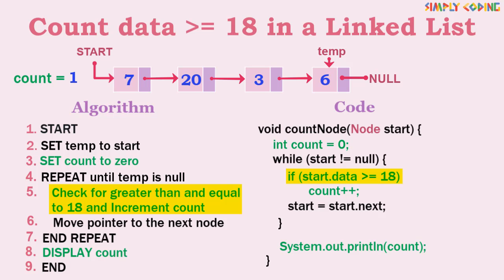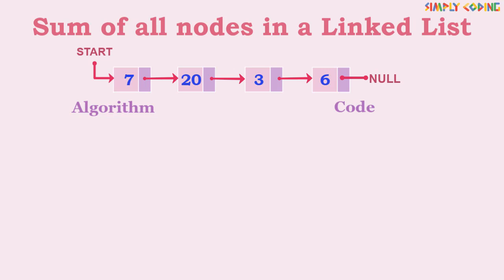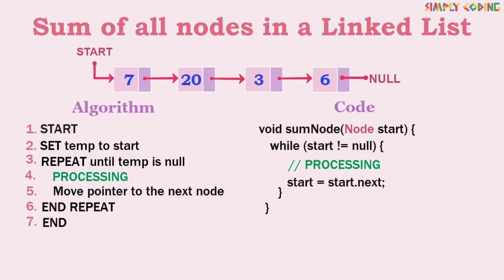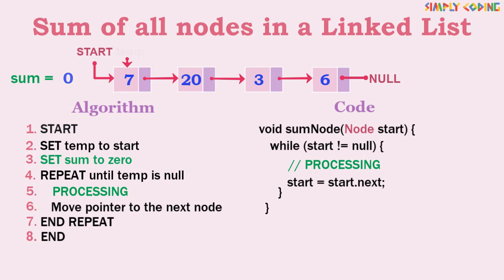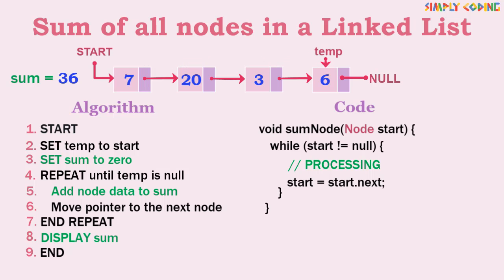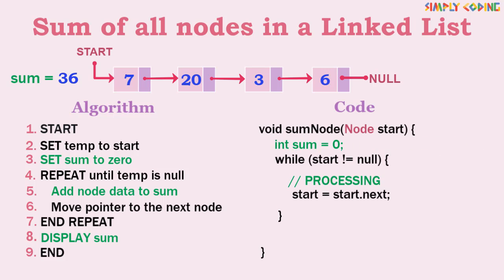The next program is to find the sum of all nodes in a linked list. Before we start the traversal we initialize a sum variable to zero. Whenever we access a node we just add it to sum. Once traversal is complete we display the sum. In code, we initialize a variable for sum, and inside the while loop we add node data to sum. Once traversal is complete we print the sum.